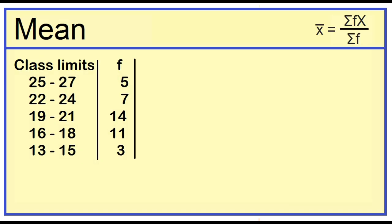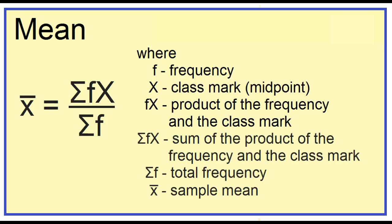Mean is equal to the sum of the product of the frequency and the class mark divided by the total frequency. Where f is the frequency, capital X is the class mark or the midpoint, fx is the product of the frequency and the class mark, summation of fx is the sum of those products, summation of f is the total frequency, and x bar is the sample mean.